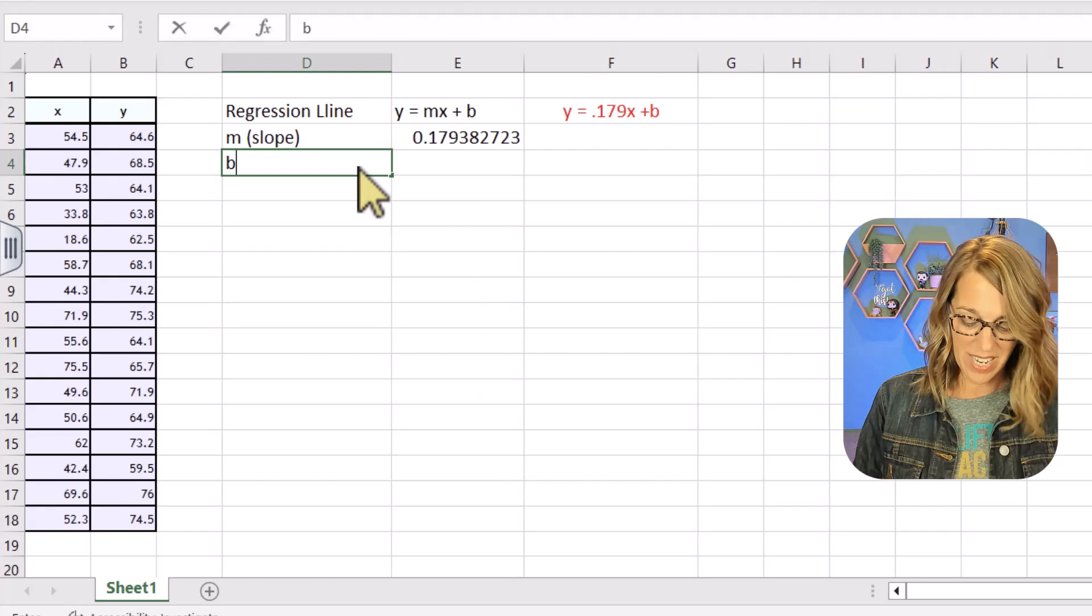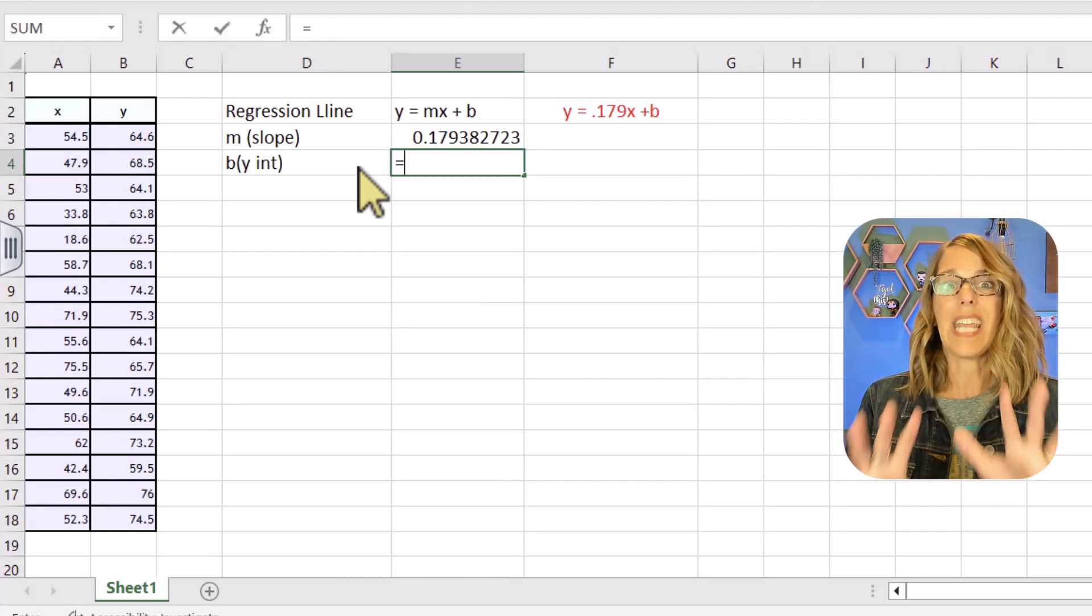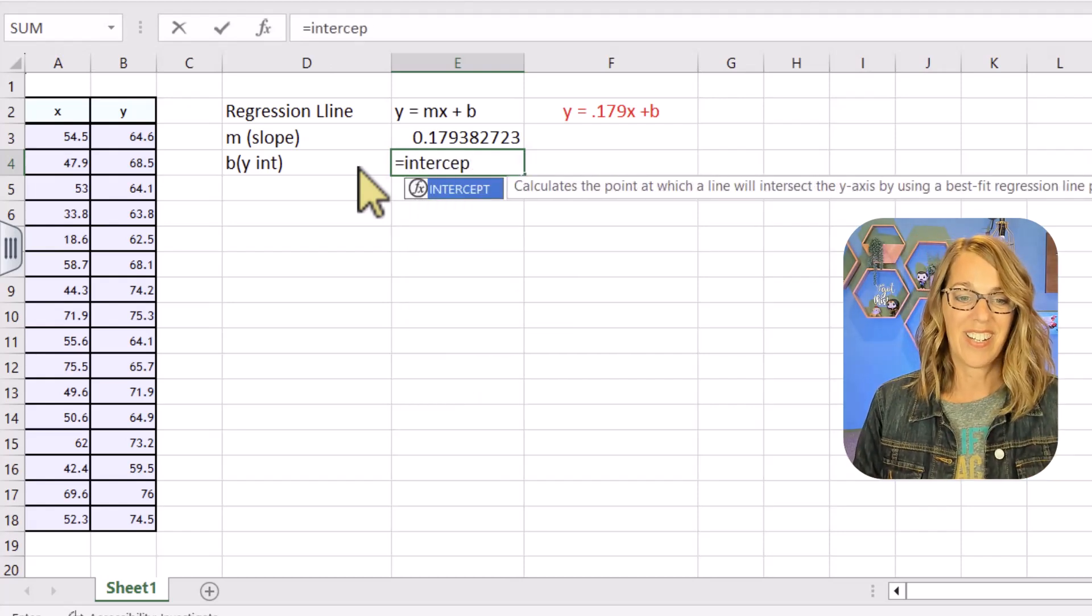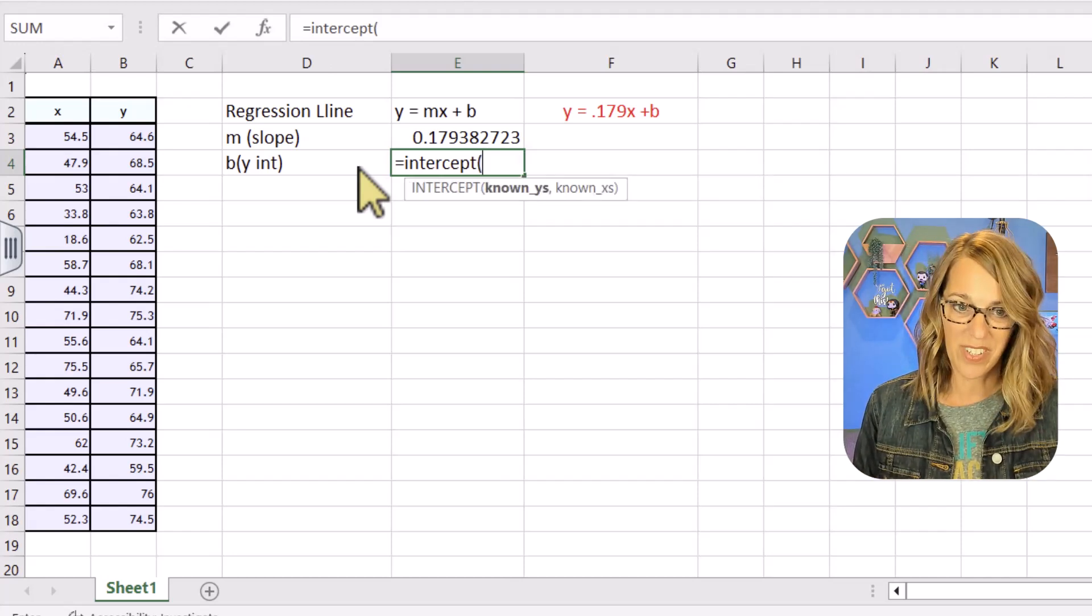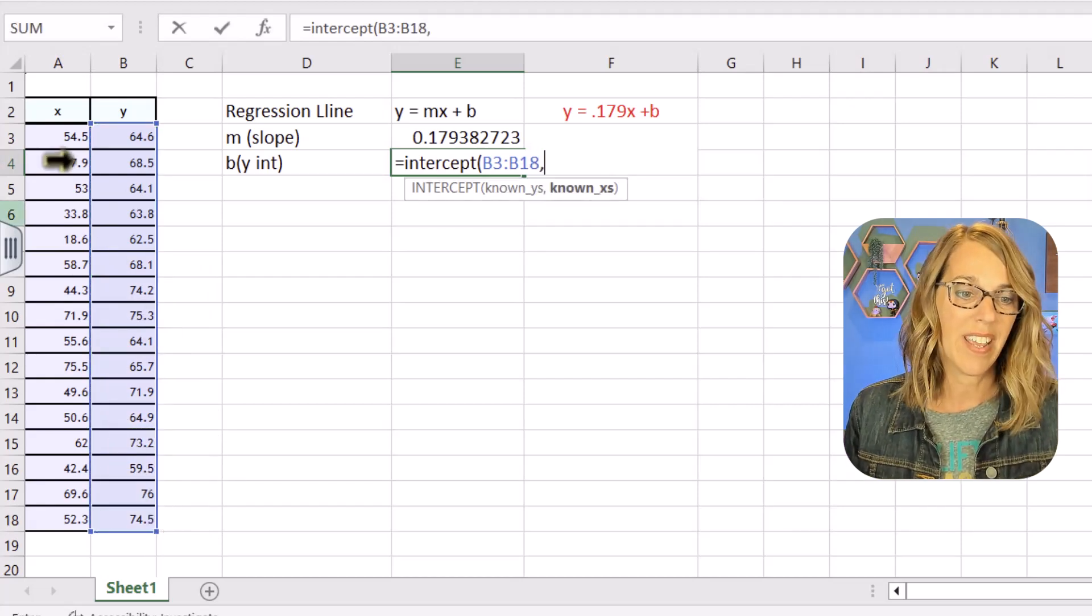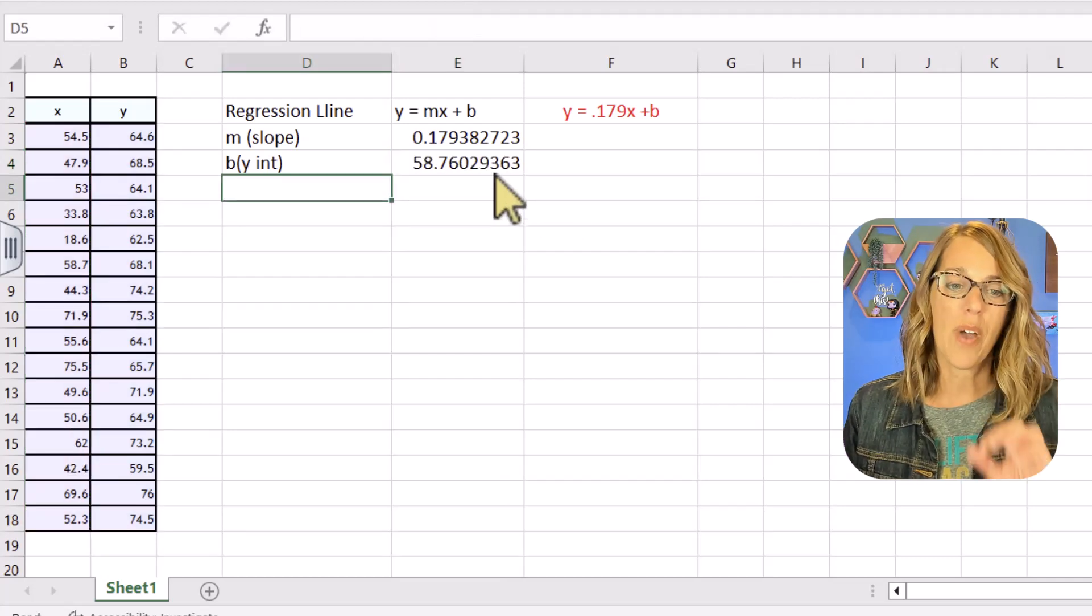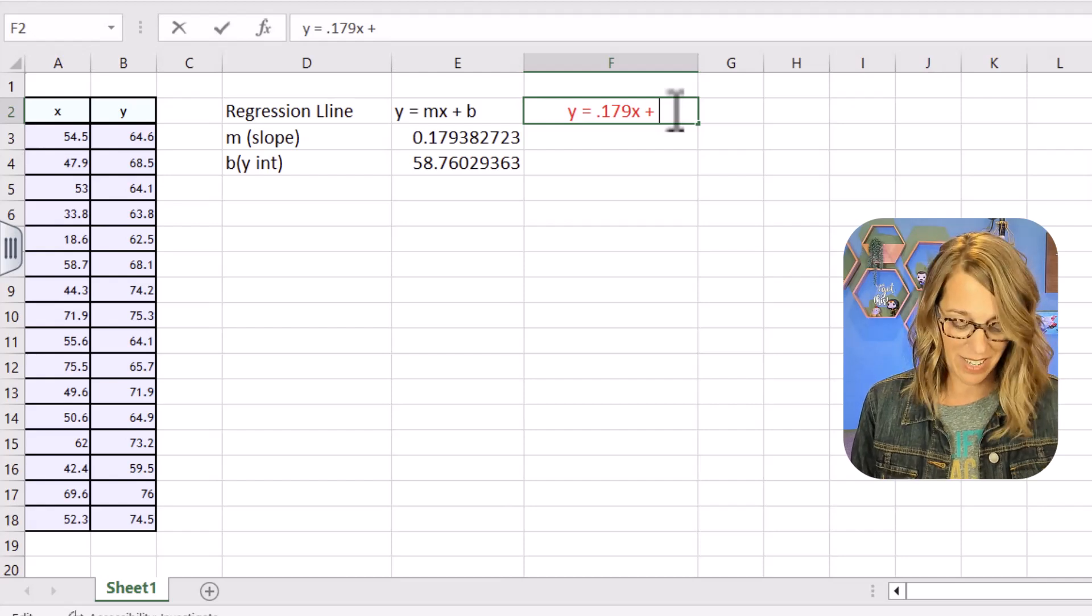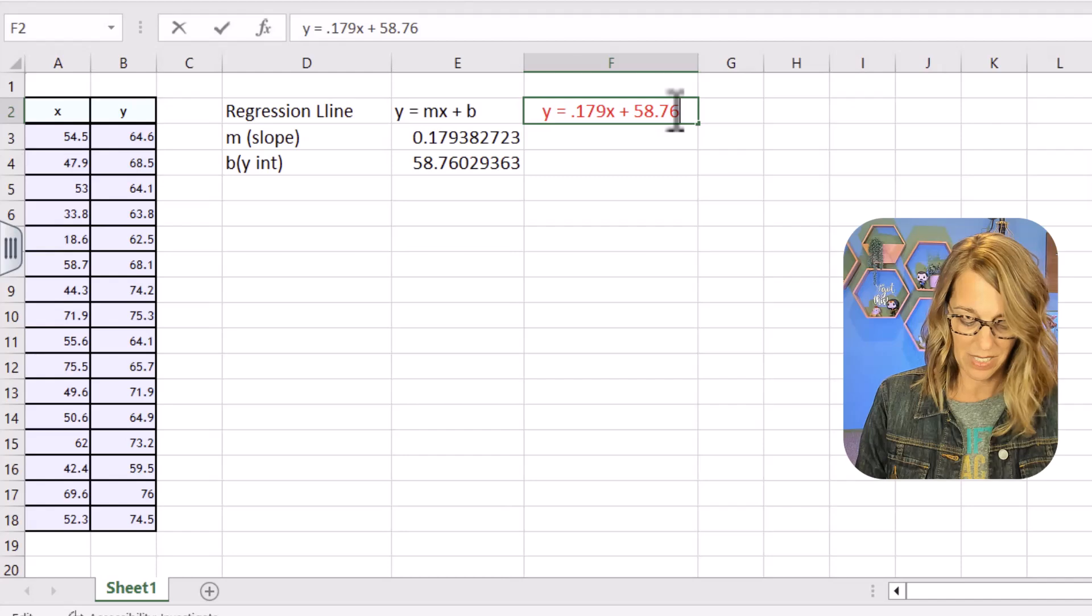Okay next up is the b which is our y-intercept. I'm just going to say y-int. For this one you're going to do the same exact thing but this time you're going to say equals intercept and sure enough up pops that intercept function that finds the intercept for a best fit regression. So parenthesis and it's going to want the same things. The known y's highlight those and then comma and those known x's. I'm going to select those and then enter. So I've got my b. Let's go ahead and put that into our regression line. We already have our regression line. It's positive. So 58 points. Let's call that 7603.